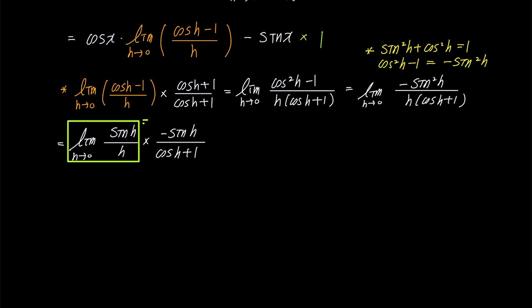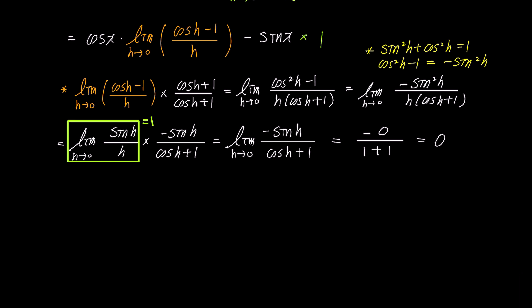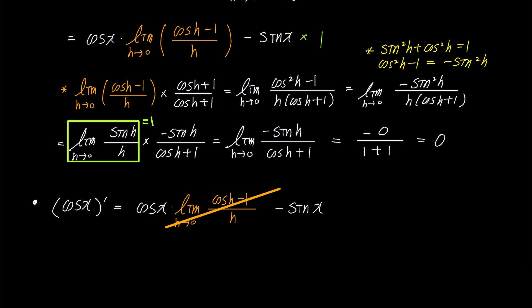So the numerator becomes negative sine squared h while the denominator remains unchanged. Expressing the numerator as sine h times negative sine h, the limit becomes sine h over h times negative sine h over cosine h plus 1. Since the limit of sine h over h is 1, we simplify to negative sine h over cosine h plus 1. As h approaches 0, this limit evaluates to negative 0 over 1 plus 1, which simplifies to 0. Therefore, the first term becomes 0, leaving us with negative sine x.